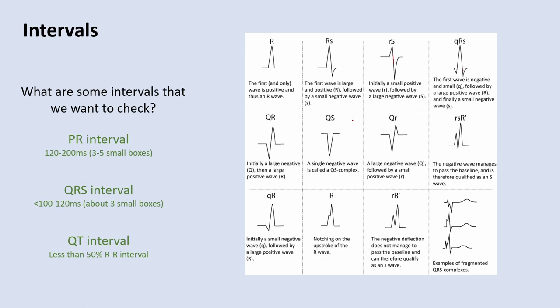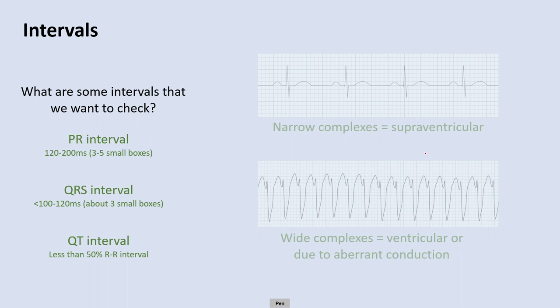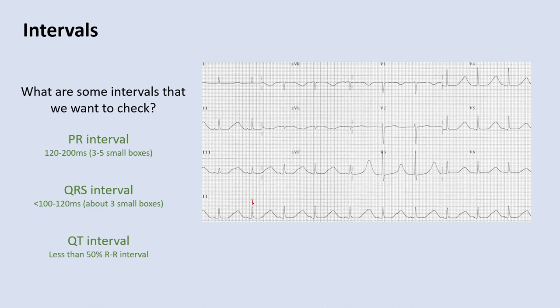Moving back to the QRS complex: you'll be differentiating between narrow and wide QRS complexes. Narrow QRS complexes tell you the origin of the heartbeat is supraventricular and conducting down normal pathways. A wide QRS complex suggests you're not going through the normal conduction system — things are slower, and beats are likely coming from the ventricles themselves, or you may have aberrant conduction such as bundle branch blocks. A prolonged QT interval exists when the QT is greater than 50% of the R-to-R interval.